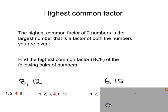With the second one, factors of 6 are 1, 2, 3, and 6. Factors of 15 are 1, 3, 5, and 15. Again, 3 is the largest that's in both lists, so the answer is 3.